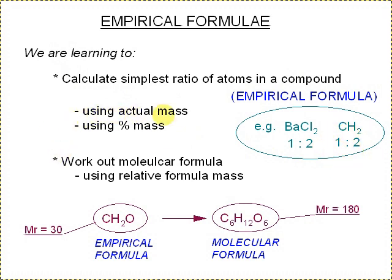Now we're going to do this first using the actual mass, then using percentage mass. Then after that, work out molecular formula using the relative formula mass. That would be like going from the empirical formula with MR of 30 here, for example, up to the molecular formula where you're using the relative formula mass, in this case of 180.